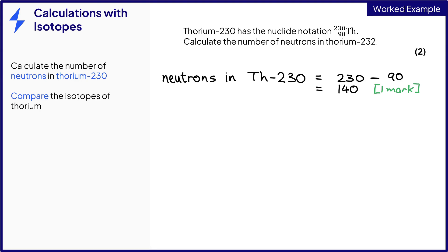Next we'll look at the difference between thorium-230 and thorium-232. There is a mass difference of two. Thorium-232 must have two more neutrons than thorium-230 as they are the same element and therefore have the same number of protons. This tells us that thorium-232 has 142 neutrons, which is the second and final mark.